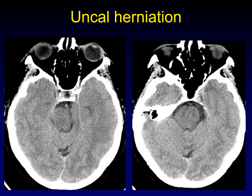The diagnosis of uncal herniation rests on the uncus, the medial aspect of the temporal lobe, not just moving slightly medially, but in fact flipping underneath the edge of the tentorium cerebelli, where it gets stuck underneath that edge and can necrose and can compromise surrounding vascular structures like the posterior cerebral artery. In order to make this diagnosis, you need to identify the edge of the tentorium and find brain tissue that is supposed to be in the middle cranial fossa that has flipped over into the posterior fossa.